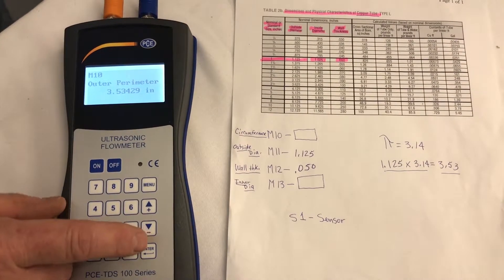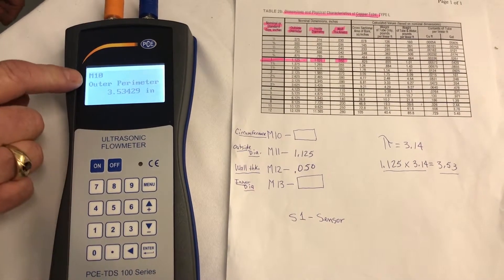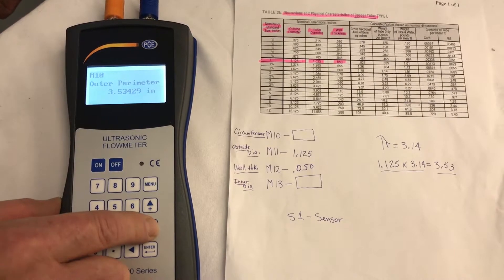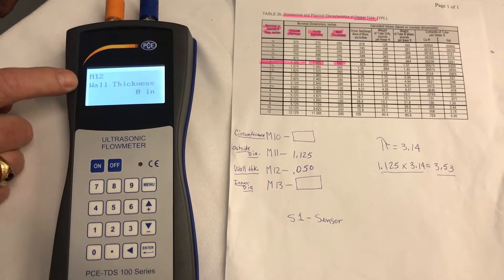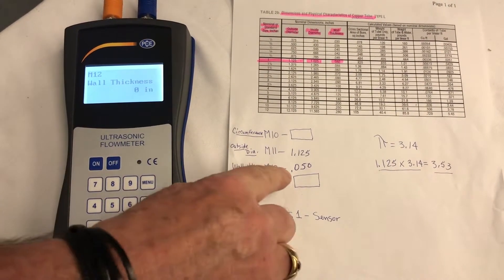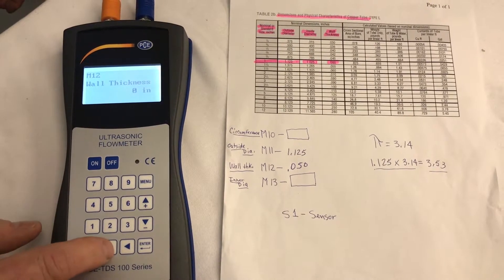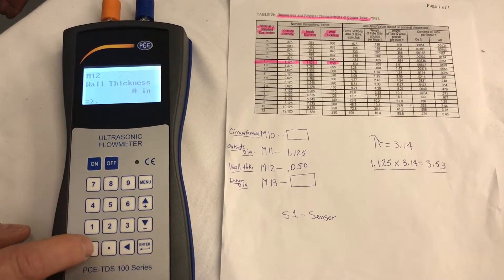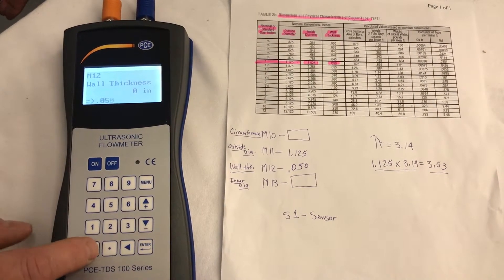On our meter, we go to M12. Right now we're on M11, so 11, 12. M12 is the wall thickness. We want to put in 0.050, enter.